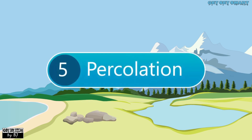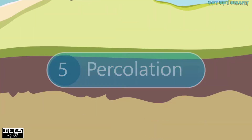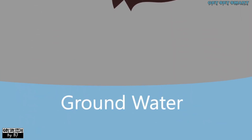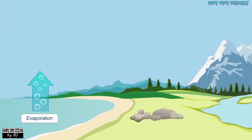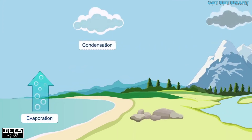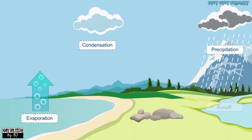Sometimes this water turns into groundwater. In this case, the water flows downward under the layer of soil and is soaked up into the ground — this process is called percolation. In this way, the water cycle, or hydrological cycle, is completed through these five processes.